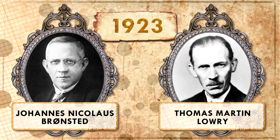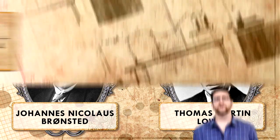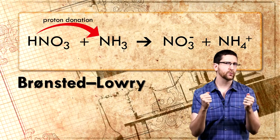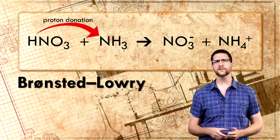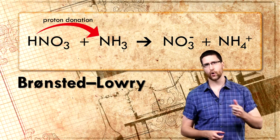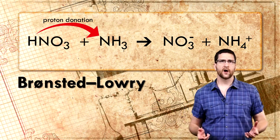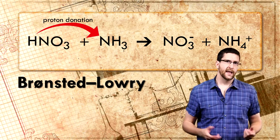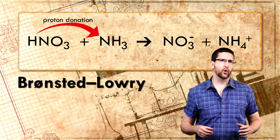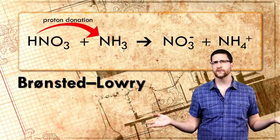In 1923, two chemists — one Danish and the other American — who worked independently came up with new definitions of acids and bases. Called the Bronsted-Lowry theory, it describes how acids and bases behave when they react with one another, not just water. A Bronsted-Lowry acid is defined as a proton donor, and a Bronsted-Lowry base is defined as a proton acceptor. It accommodates Arrhenius' definitions, but is applicable to a wide range of chemical happenings, because sometimes water isn't involved in reactions.